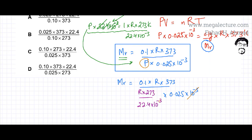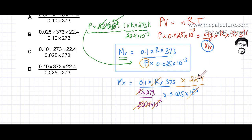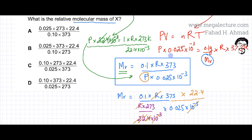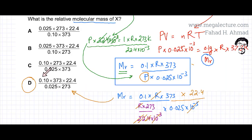After cancelling the 10 to the power minus 3 and R, the expression becomes: 0.1 multiplied by 373 multiplied by 22.4, divided by 273 multiplied by 0.025. Comparing this to the answer options, this matches Option D exactly. Therefore, Option D is the correct answer for the relative molecular mass of X.